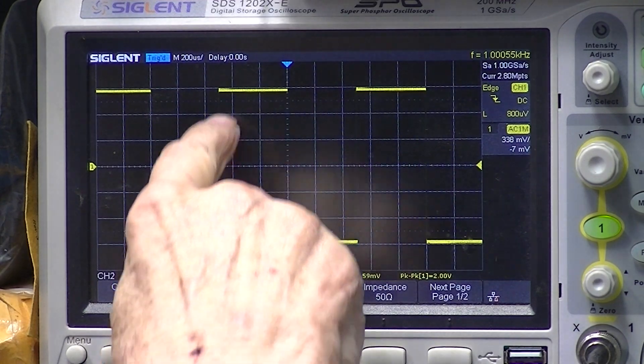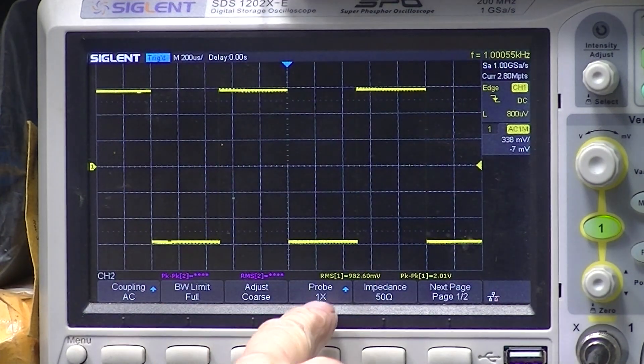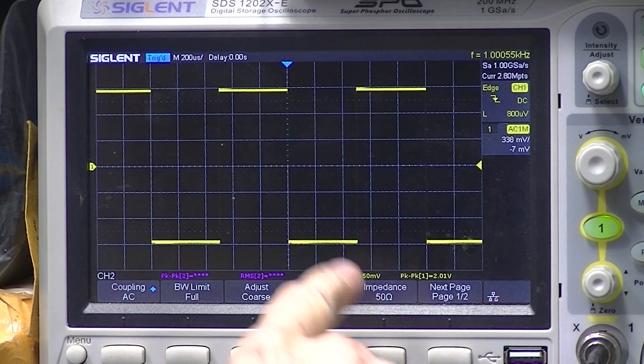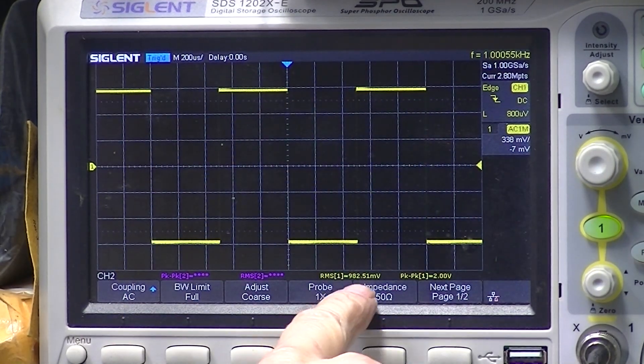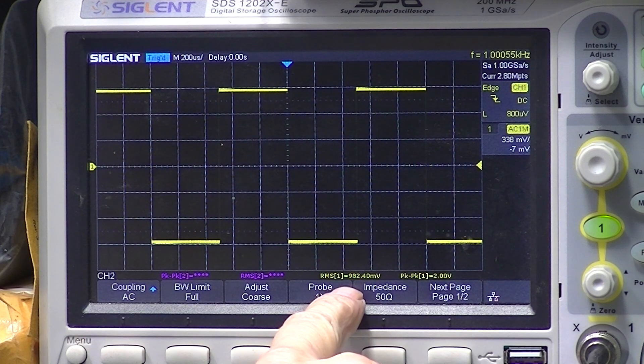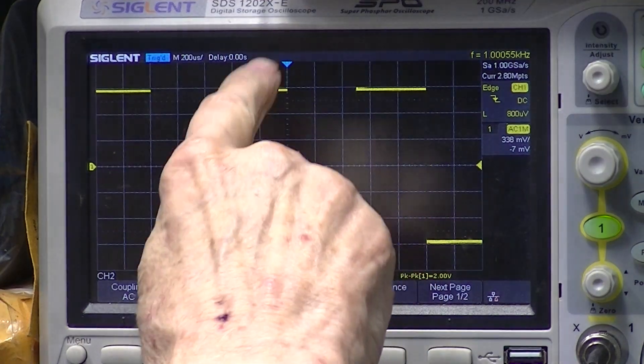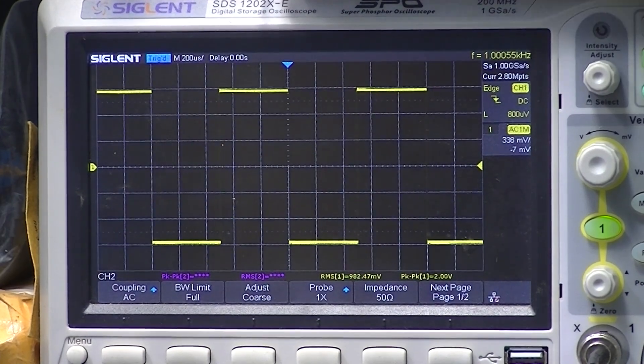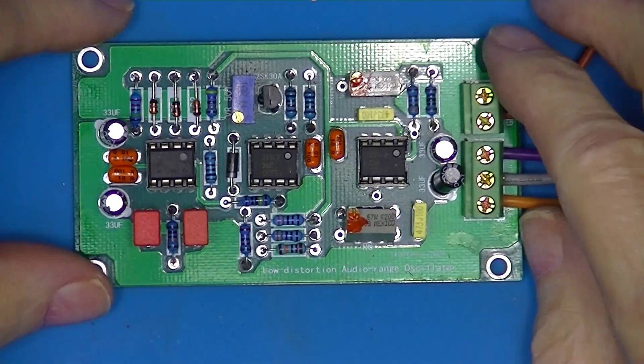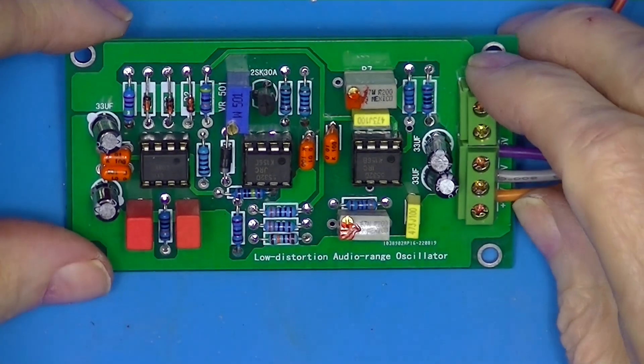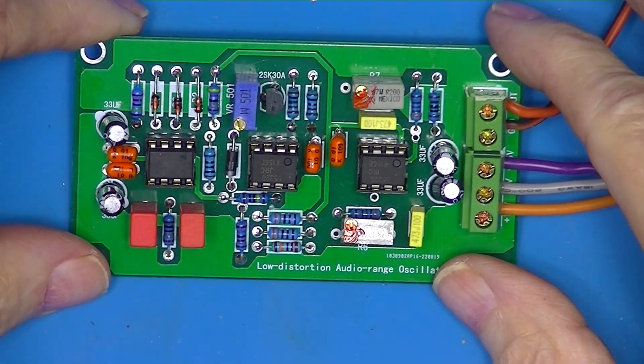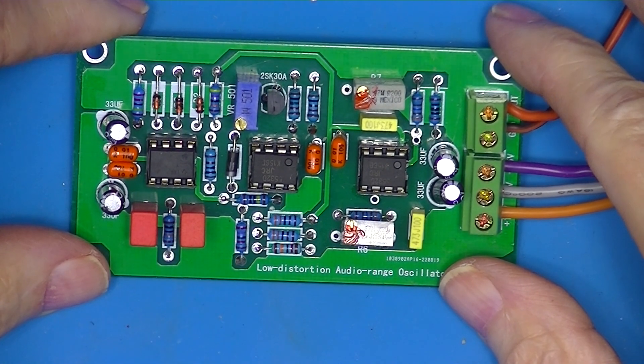The RMS also indicates a distortion component. As I said, if it was a perfect sine wave, the RMS would be 0.707 times the peak. Here it's almost equal to the peak. So I think this little board would be just fine for testing our JLH 1969 amplifiers.